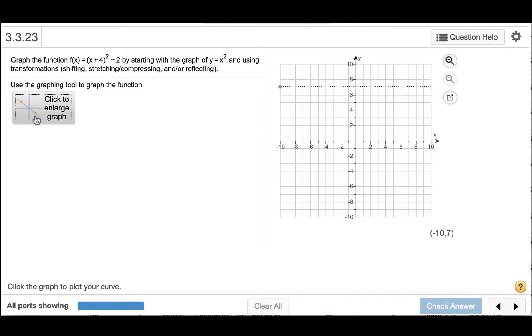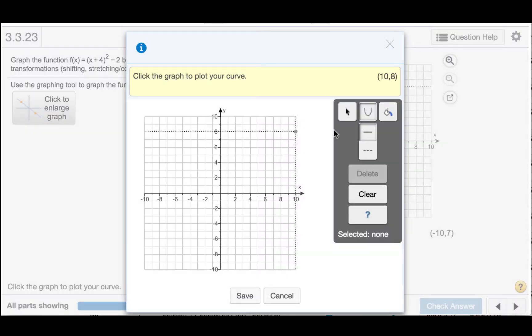So I'll click the button that says 'click to enlarge graph.' The function that I want to graph is a parabola, so I will click the parabola symbol, and then I will start by putting a vertex at (0,0).